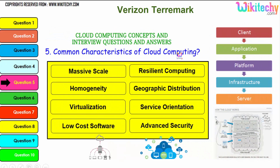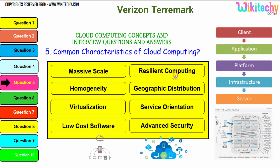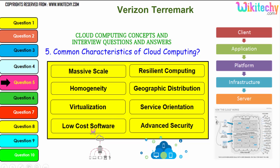Let's talk about the common characteristics of cloud computing. Massive scale: however big you need, it can be provided. Homogeneity: you can use uniform environments. Virtualization: you are able to create and use virtual machines. Low-cost software: it becomes really cheaper. Resilient computing: processing is done remotely without disturbances. Geographic distribution: data and computing are geographically distributed. Service orientation: it is based purely on service orientation, and advanced security is an important one.